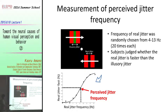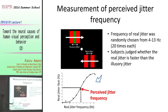We can define the passive jitter frequency as the frequency with the 50% response. At this frequency, subjects said this is faster in half of the trials and this is faster in the other half, so the passive jitter frequency can be regarded as equivalent between the two. This is how we measure the passive jitter frequency.